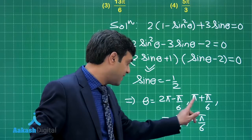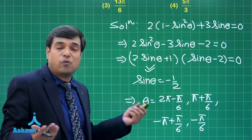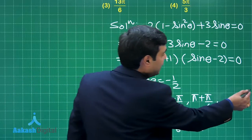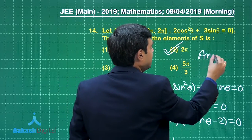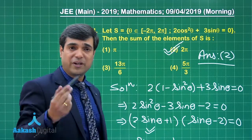Adding up these four solutions, we can see -π/6 + π/6 cancel, and -π + π cancel. So the sum of all solutions is simply 2π. From the given options, the correct answer is 2π, option number 2.